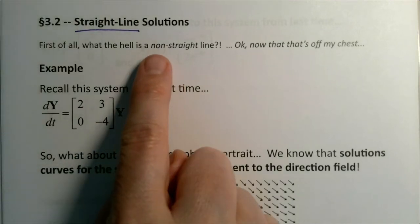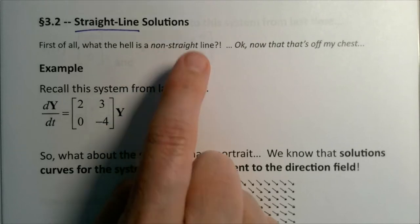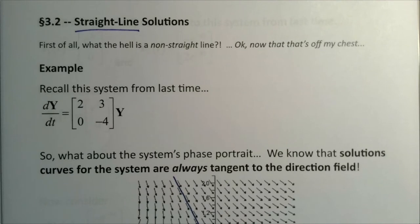Ever think about the phrase straight line and the fact that it's sort of redundant to say a straight line, because if it's a line, of course it's straight. But what would a non-straight line look like? One of the things that's going to come up in this section is what do we mean by a straight-line solution and how could it be a non-straight line solution.